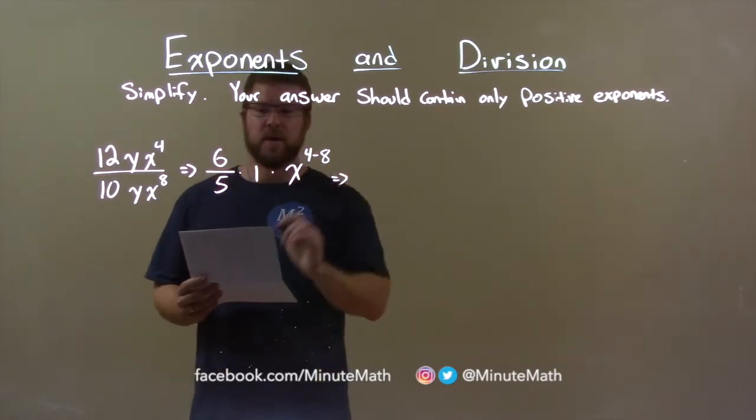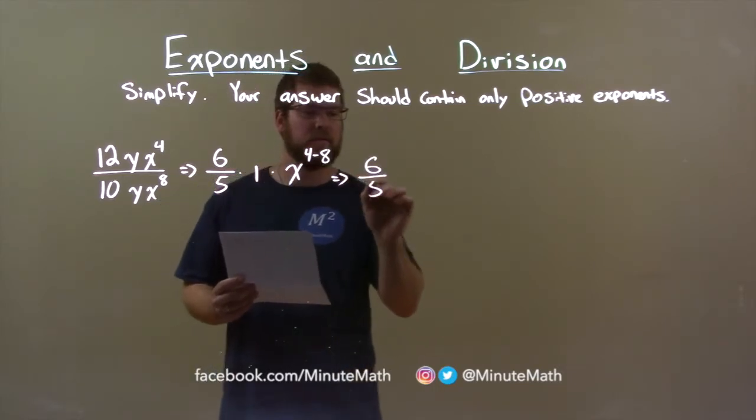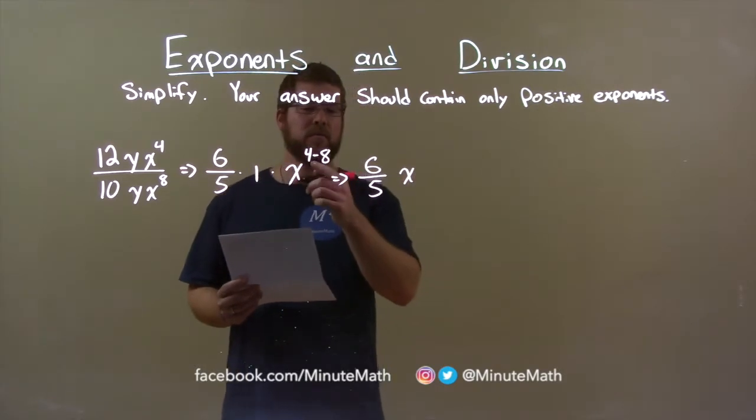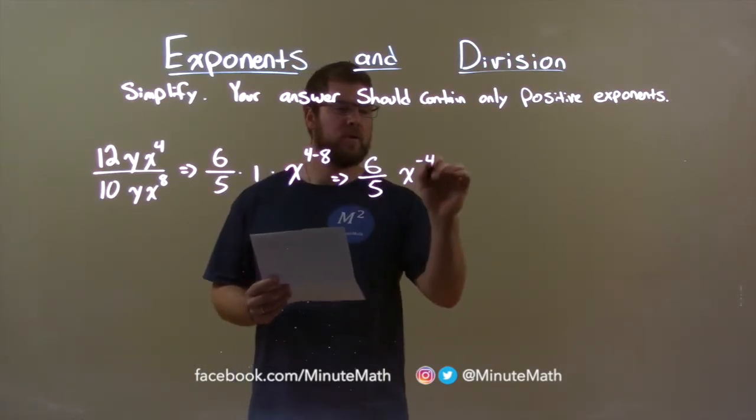Let's keep simplifying here. 6 fifths, don't worry about the multiplier by 1, doesn't change anything. And x to the, well, 4 minus 8 is the negative 4th power.